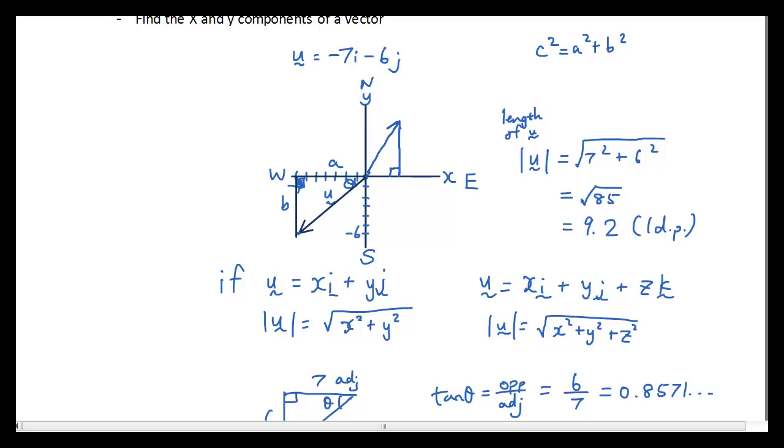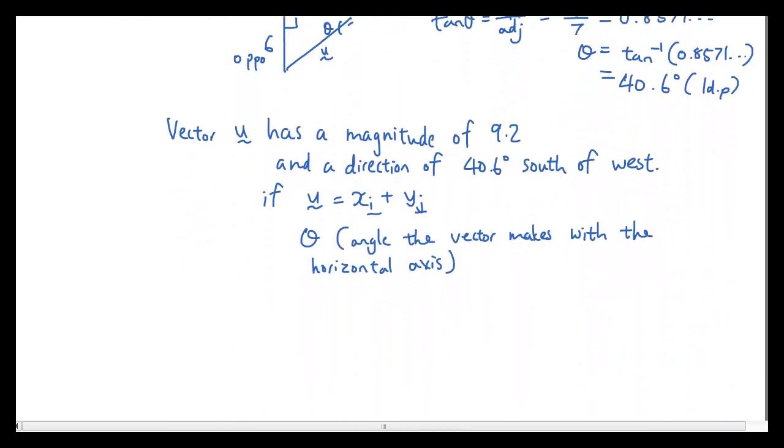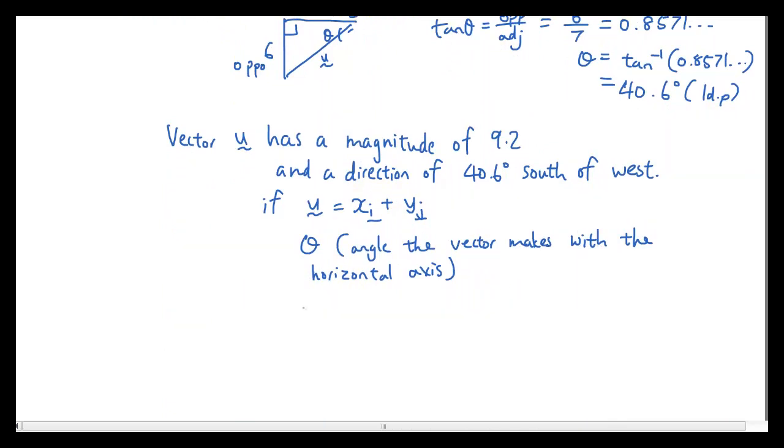But if we had a vector going this way, some people don't realize that this is the angle we're looking for. Sometimes they think that they have found this angle, which is not what this formula is going to give you. This formula is going to give you the angle between the vector and the horizontal axis, which is that one. So you need to make sure that you realize which angle it's giving you if you follow this formula.